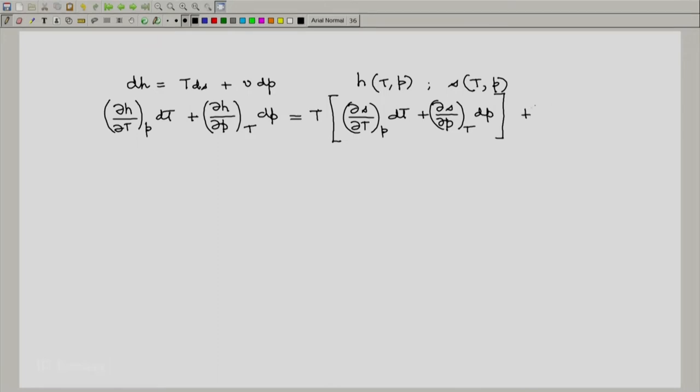The second term plus V dP remains as is. Since P and T are independent variables, coefficients of dT on both sides must be equal. Comparing the coefficients of dT gives us partial of H with respect to T at constant P equals T times partial of S with respect to T at constant P.